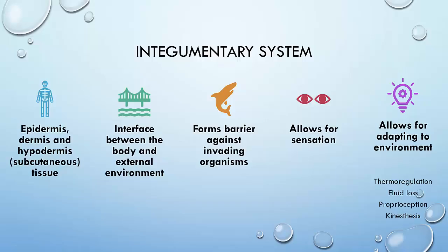The integumentary system. The epidermis, dermis, and hypodermis make up the integumentary system. It is the interface between the body and the external environment — a dynamic system that forms a barrier against invading organisms and outside influences. It also allows people to sense and adapt to the environment in terms of thermoregulation, fluid loss, proprioception, and kinesthesis.